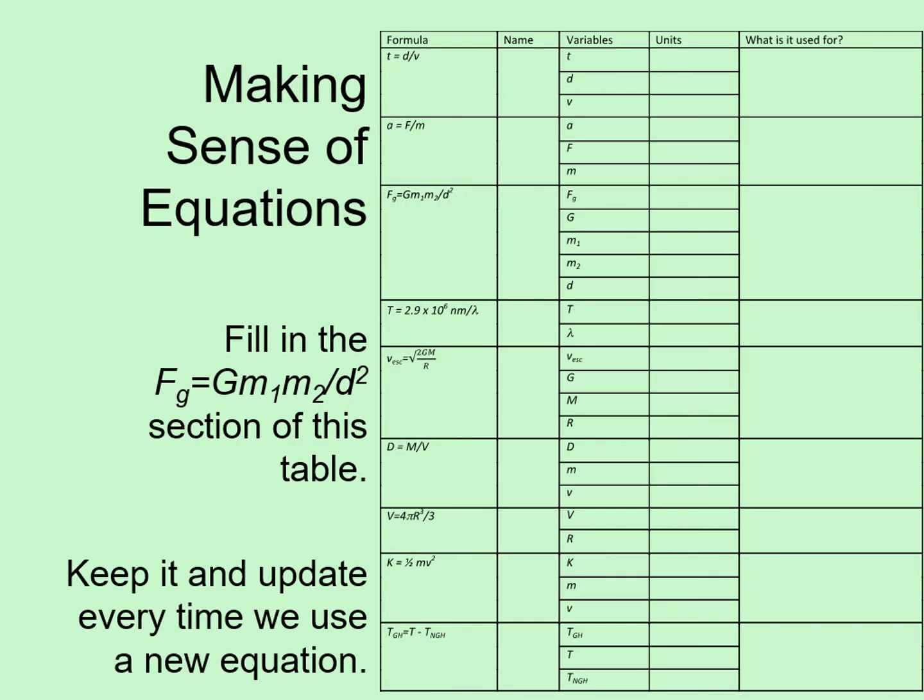Remember this table? You should be using it to help you keep track of the equations we use in this course. Fill in the F equals GMM over D squared section of this table now. Keep it and update every time we use a new equation. You'll find this page useful doing homework and reviewing for exams.